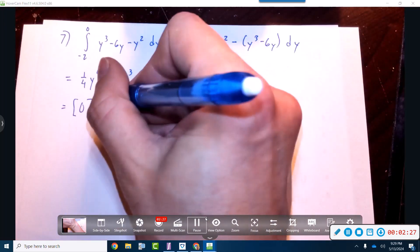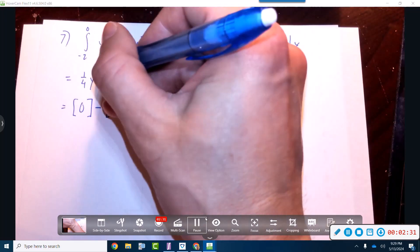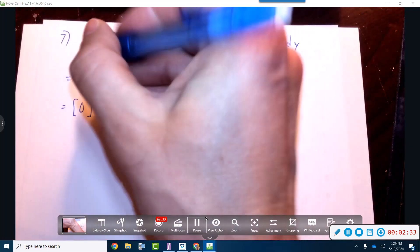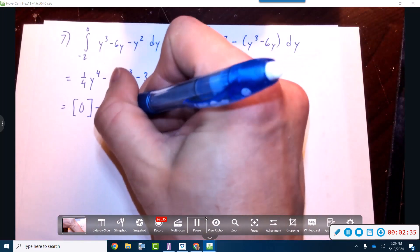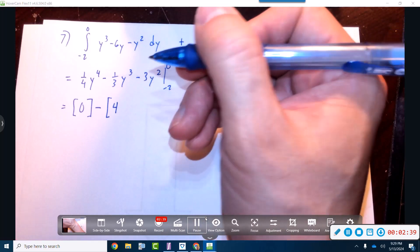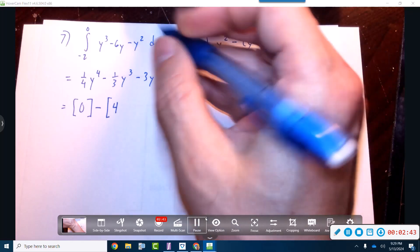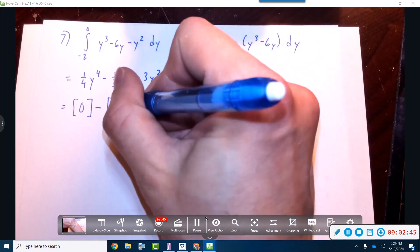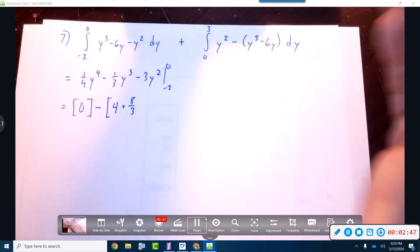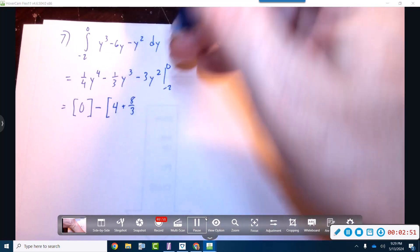Minus, okay, so now negative two to the fourth power would be 16. 16 times one fourth is four. This guy, negative two to the negative eight would be a positive eight over three. But let's slow down here. That's negative double negative eight over three.